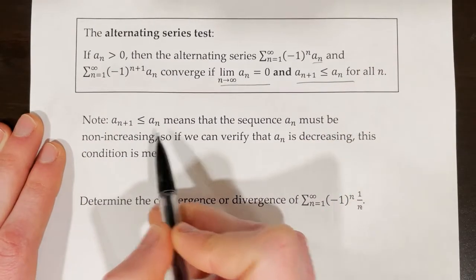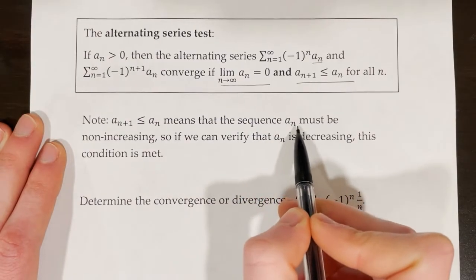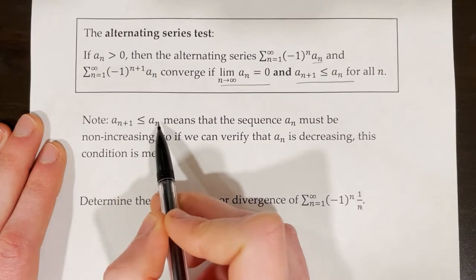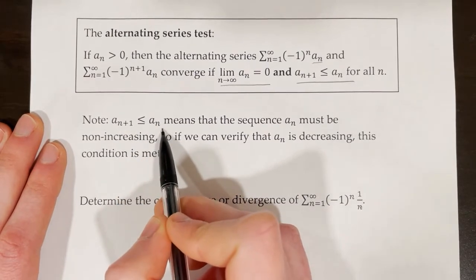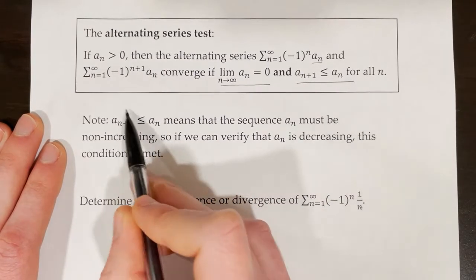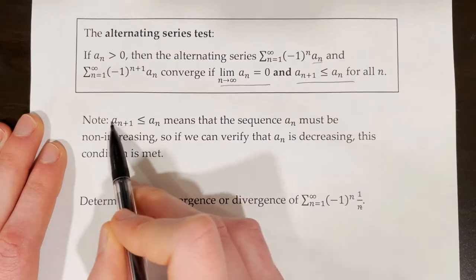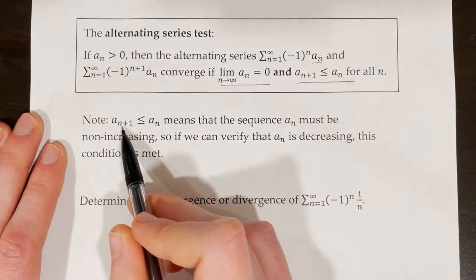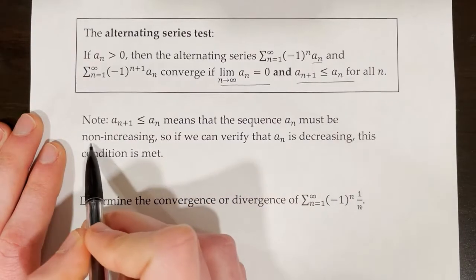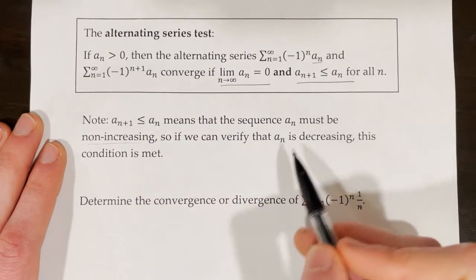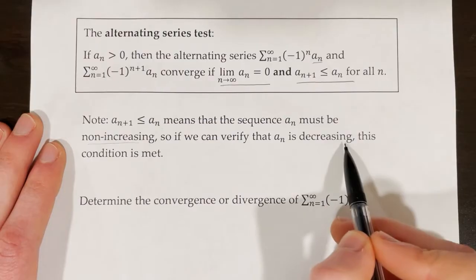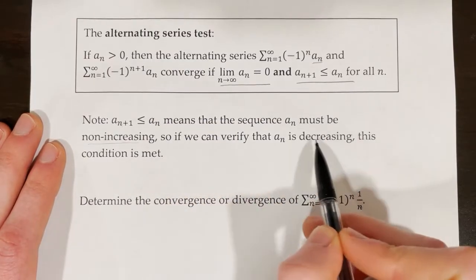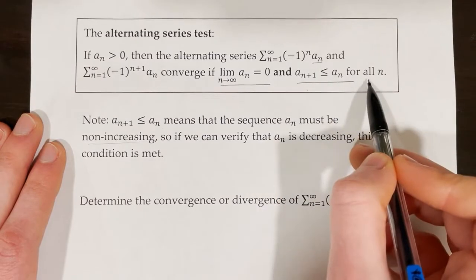What does the second condition really mean? It means that the sequence a sub n must be non-increasing — the next term must be less than or equal to the previous term, so it can be decreasing or staying the same, but not increasing. The vast majority of the time we'll just verify that a sub n is decreasing, since that meets the criteria.